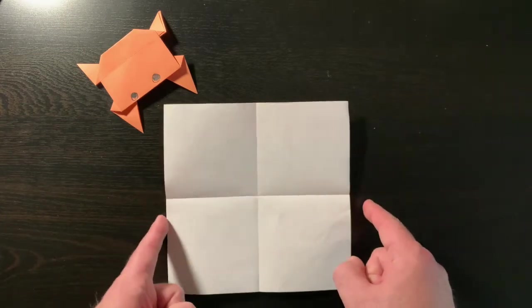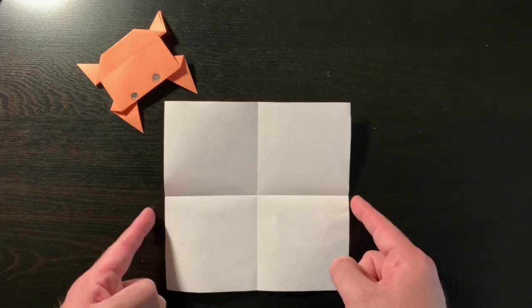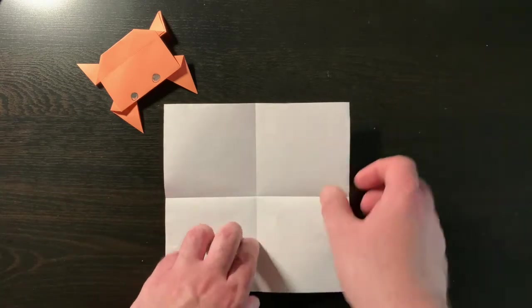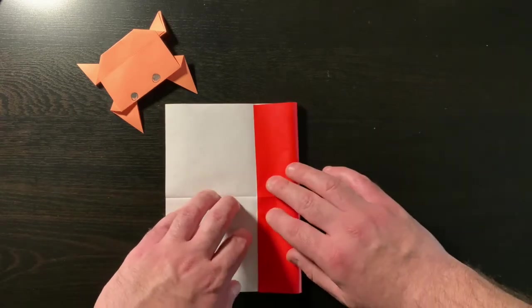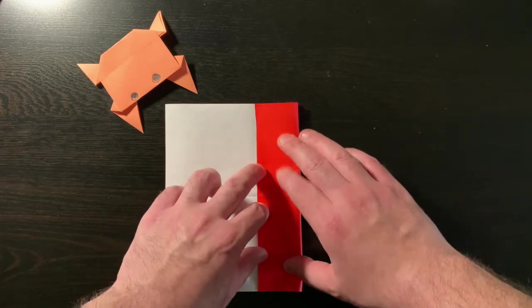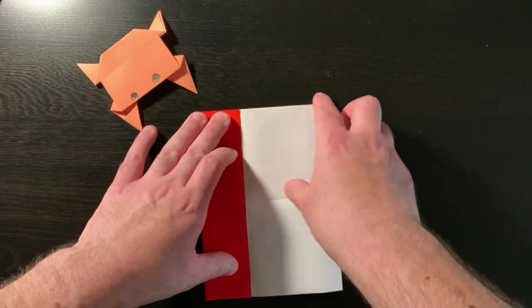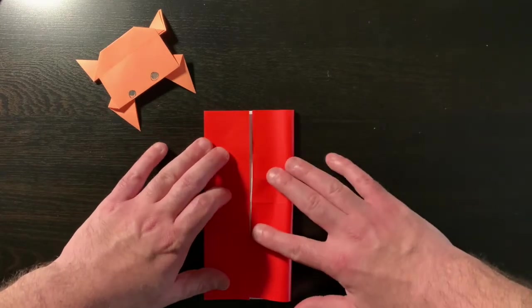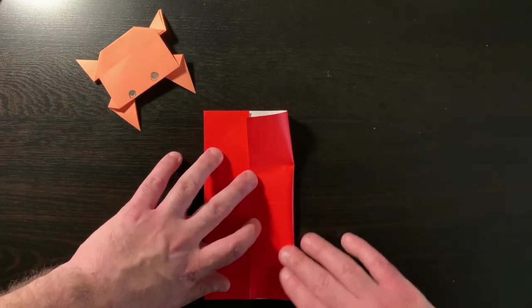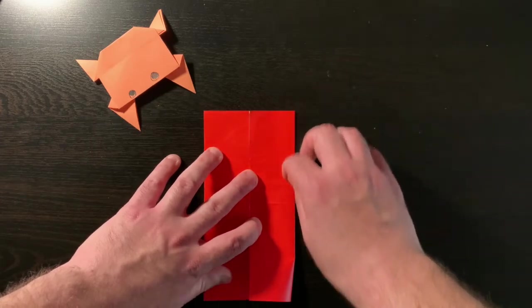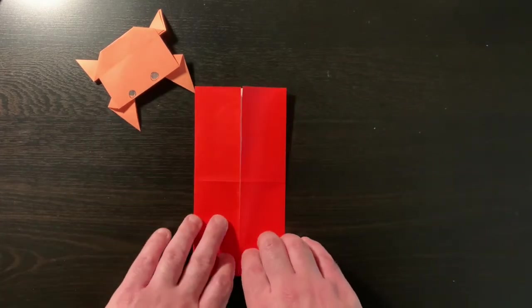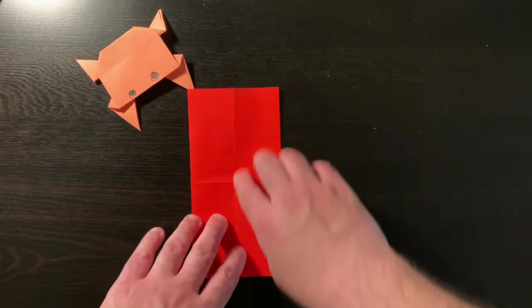Now with it open and we see a plus sign, let's take our two sides, these two sides, and fold them in to meet our middle crease. Because of how I am very right-handed, I need to turn it around so I make it work.